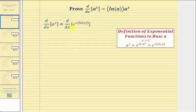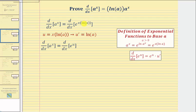Notice here we have a composite function, so we'll have to apply the chain rule to find this derivative. We'll let u be equal to the inner function, which in this case is x times natural log a. Therefore, u prime, or du/dx, is equal to natural log a, because the derivative of x with respect to x is one, and natural log a is a constant.